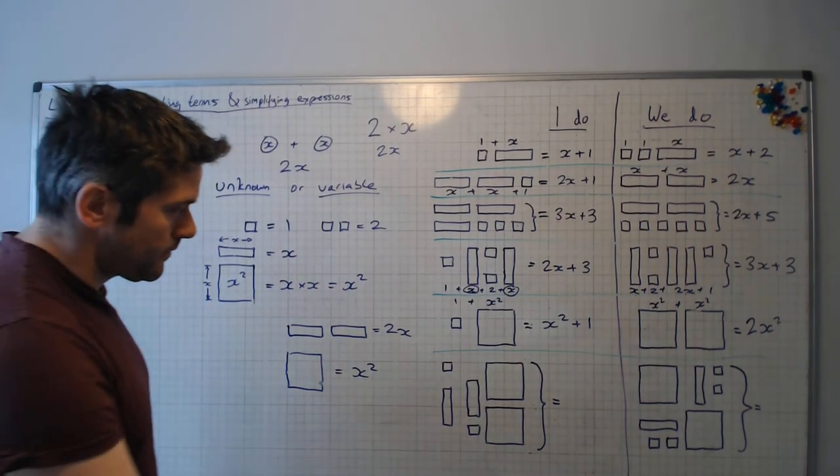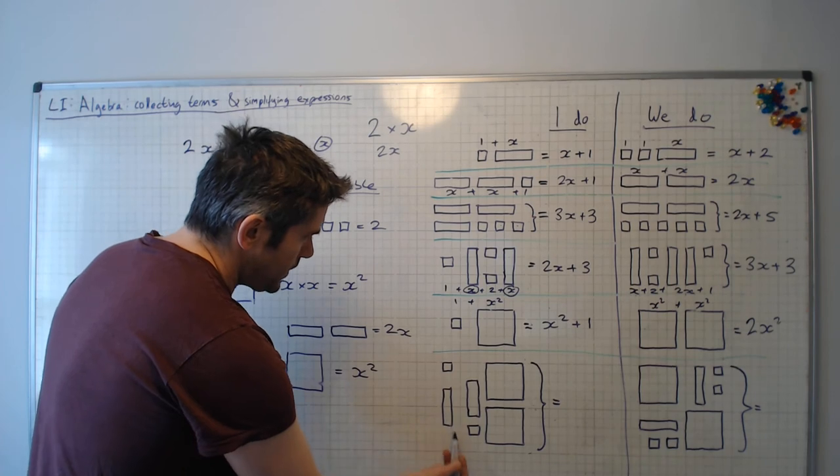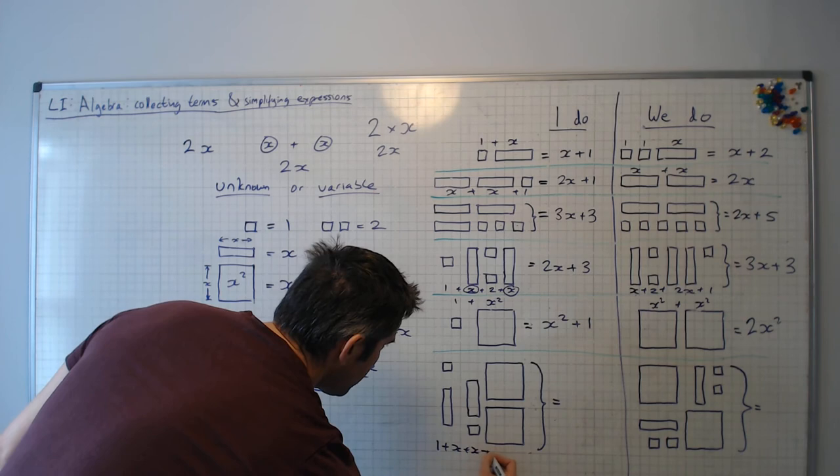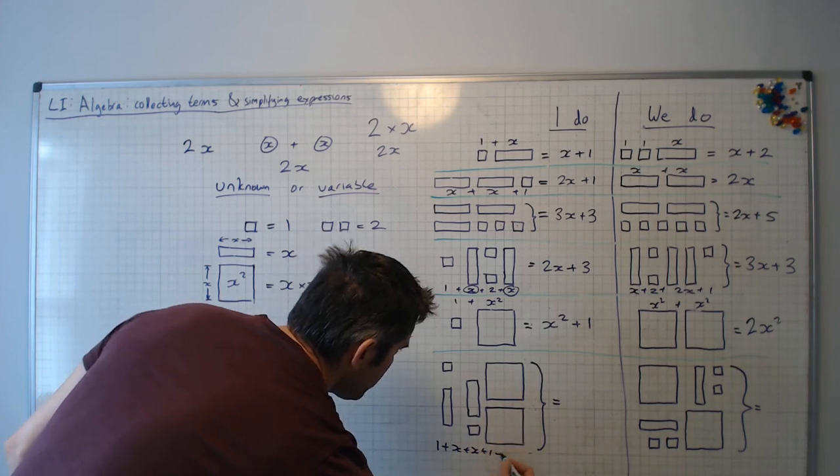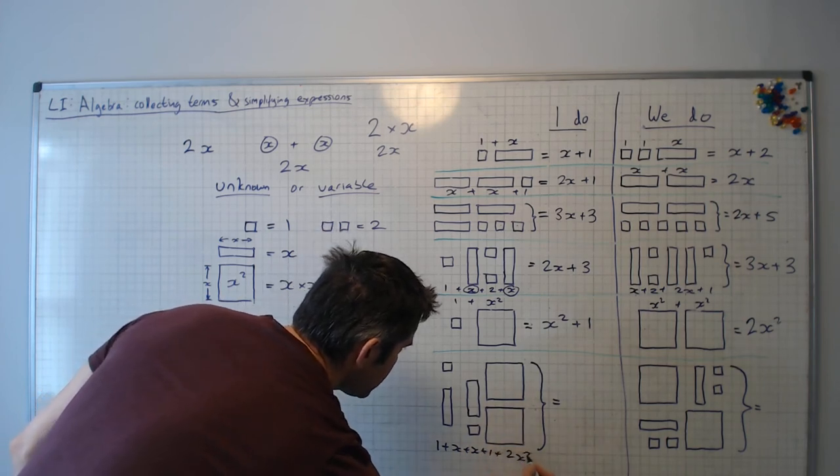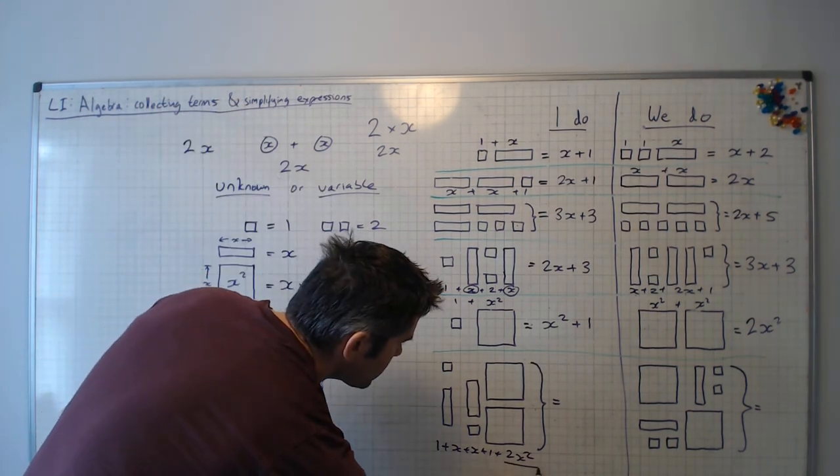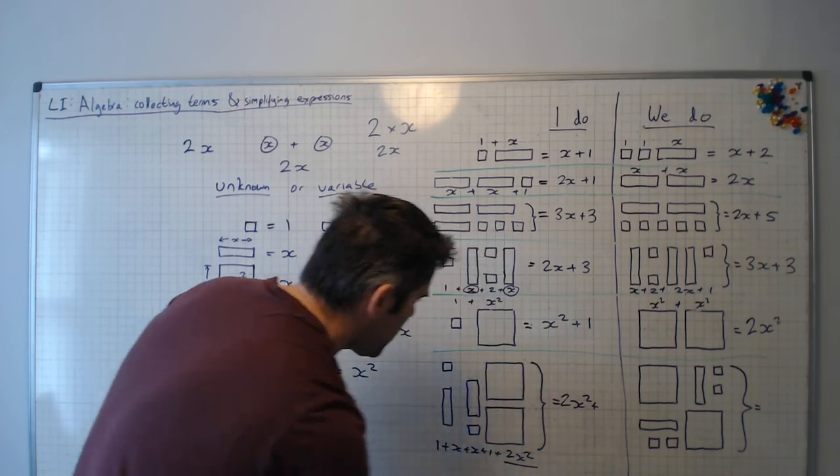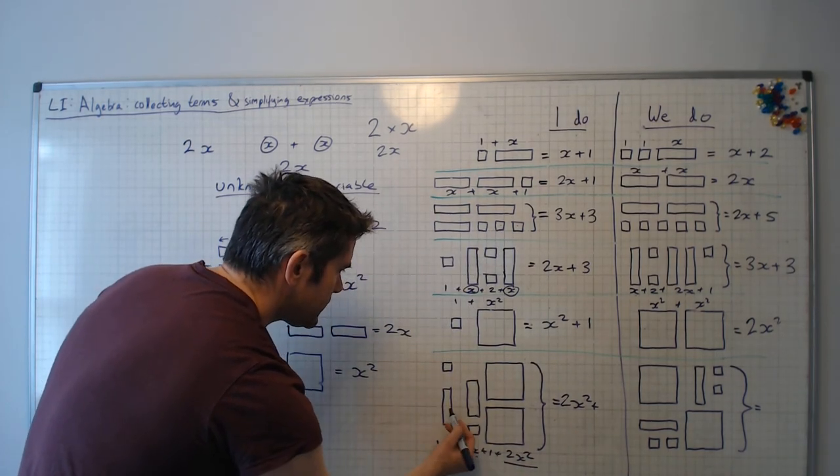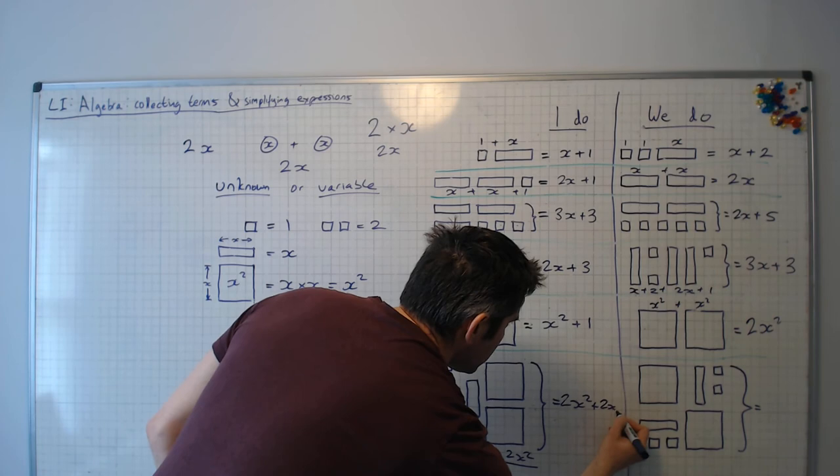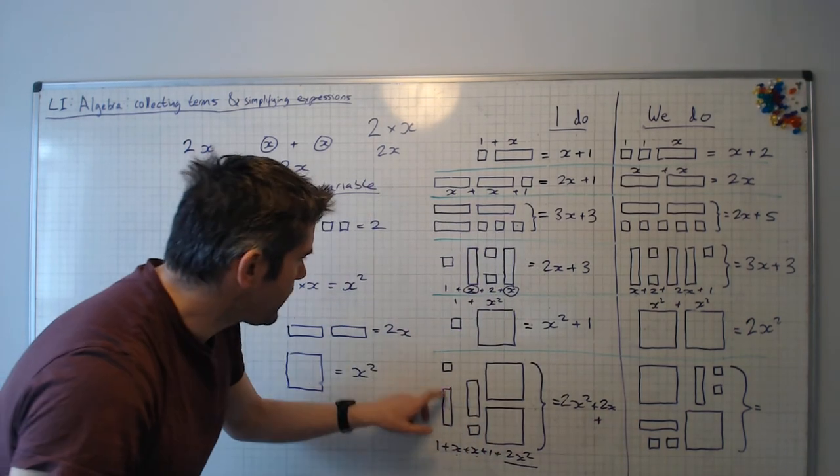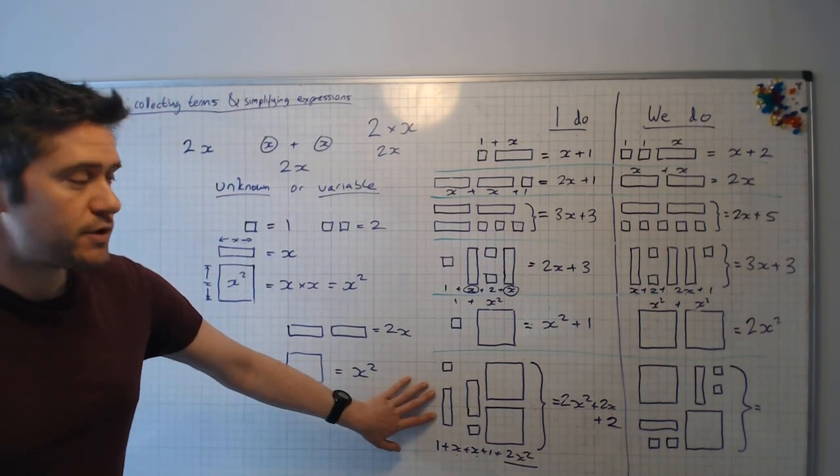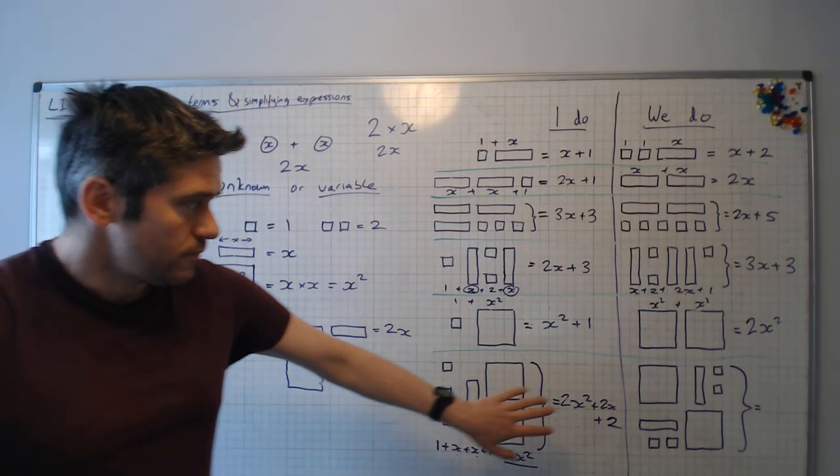Okay, last question. I've got 1 plus x. So I've got 1 plus x plus x plus 1 plus 2 x squareds again. So in total, I've got 2x squared plus 1, 2x, 2x plus, run out of space there, 1, 2. So we say this is 2x squared plus 2x plus 2.